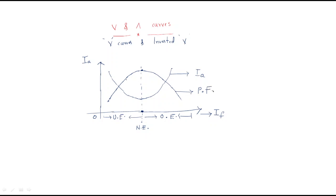This curve of power factor versus field current is known as the inverted V curve, because it looks like an inverted V shape.